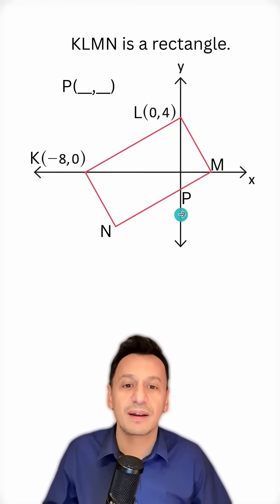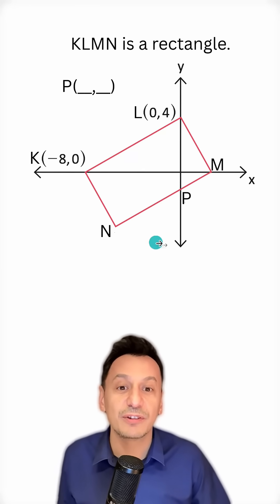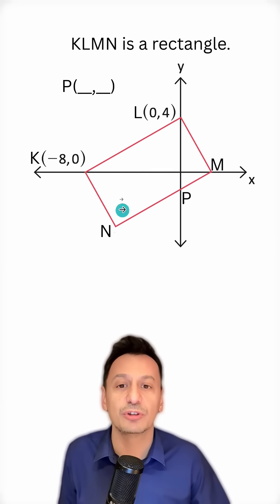KLMN is a rectangle and we're asked for the coordinates of point P. Of course we can solve this question using analytic geometry. In fact the question itself has an analytic geometry vibe. But actually we can solve this question much more simply by using trigonometry. That's what we're going to do.